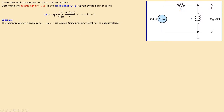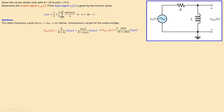Using phasors, we can write the output voltage using the voltage divider rule: the output equals the reactance divided by the total impedance, multiplied by the input voltage. Working out the reactance gives jωₙL in both the numerator and the total impedance in the denominator. Substituting the given values, we get a complex expression where Vout depends on Vs through the circuit dynamics.